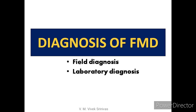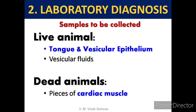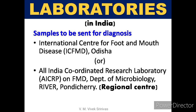Diagnosis can be done at field level or in laboratories. Field diagnosis is based on history, clinical symptoms, and post-mortem findings. For laboratory diagnosis, tongue and vesicular epithelium or vesicular fluids are collected from live animals; in dead animals, pieces of cardiac muscle can be collected. Samples are sent to the International Centre for Foot and Mouth Disease (ICFMD), Odisha, or to its AICRP network unit at the Department of Microbiology, Rajiv Gandhi Institute of Veterinary Education and Research, Pondicherry.